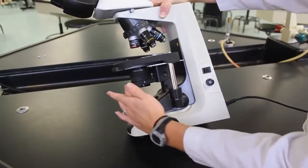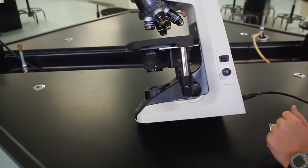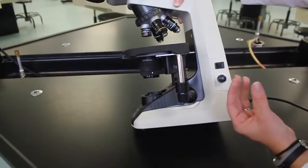Underneath the stage, this is the condenser. It controls the amount of light that comes in and narrows the light beam.